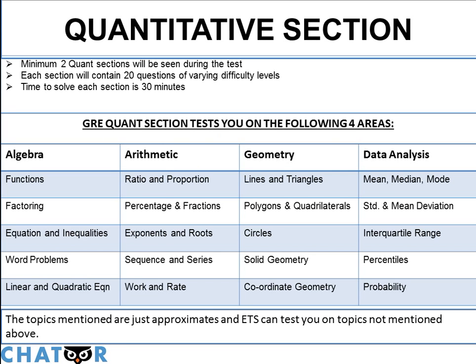A student normally sees a minimum of two quant sections during the test. Sometimes he or she might see a third quant section, and this is your experimental section. We have already covered what the experimental section is and why it's there in the GRE pattern video. If any of you have questions about it, I suggest that you check out that video.